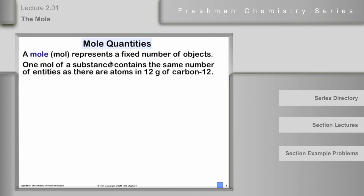The definition you need to learn: a mole of a substance contains the same number of entities — this could be atoms, ions, molecules, anything — as there are atoms in 12 grams of carbon-12 isotope. Carbon-12 is the basis for the atomic mass scale.